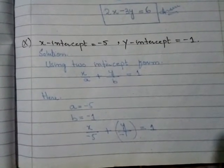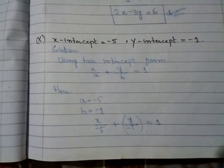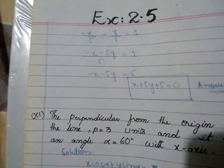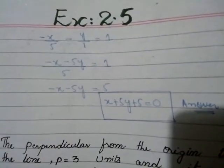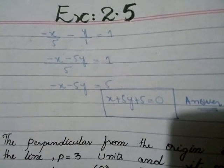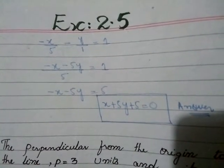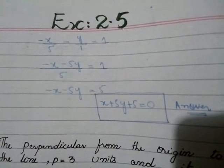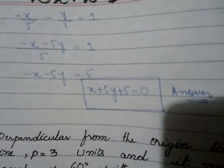Question number 10: x-intercept is equal to −5 and y-intercept is equal to −1. Solution: using two-intercept form, X/a + Y/b = 1. Here a = −5, b = −1. X/(−5) + Y/(−1) = 1, giving −x/5 − y = 1. Taking LCM of 5: −x − 5y = 5. Rearranging: x + 5y + 5 = 0.